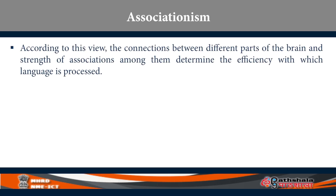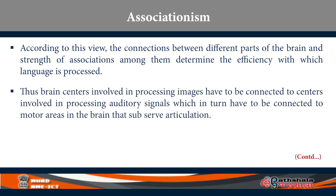Associationism holds that connections between different parts of the brain are more important than the areas themselves. The strength of the connection is what allows us to understand and use language. Brain centers involved in processing images, for instance, have to be connected to the motor area in the frontal lobe, which sends instructions down to our speech muscles to open our mouth and speak. So it is these associations — comprehension area to production area to motor area — which are important, not particular locations. This is why it is called associationism.